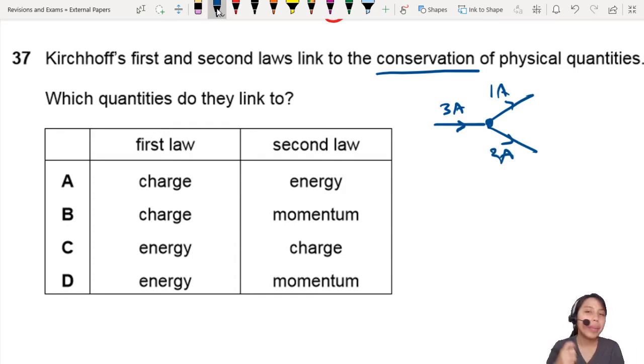Why is that so? Because charge must be conserved. Charge. If you have a certain amount of charge going in, you must have a certain amount of charge going out. So charge is the first one that they're talking about.